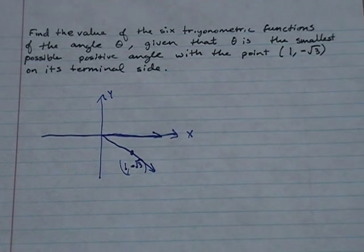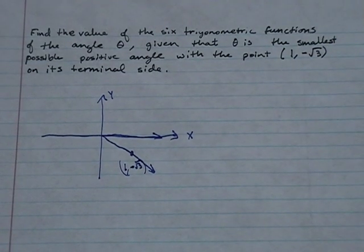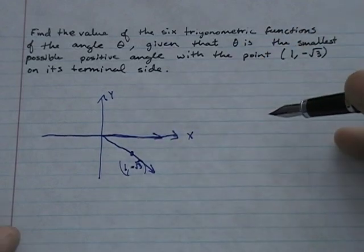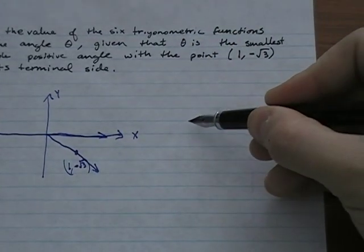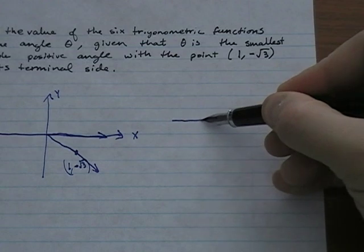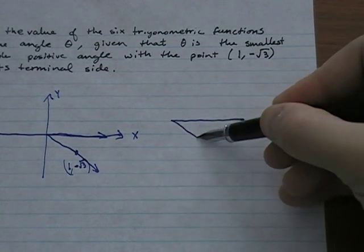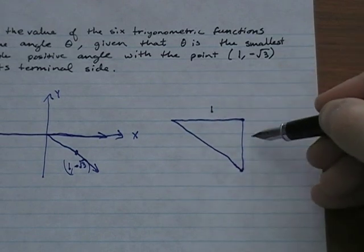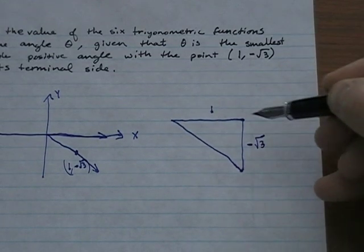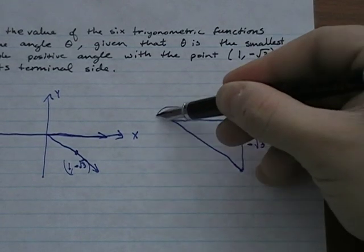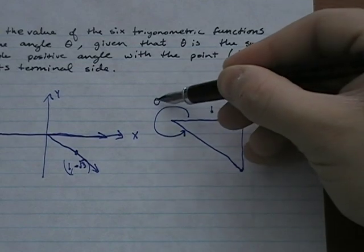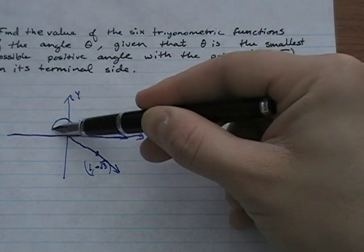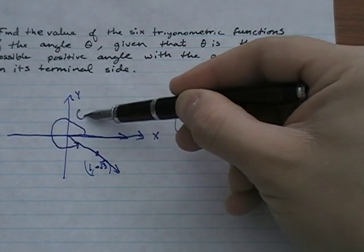What that's really telling me — zooming in — is I've got a triangle where the horizontal leg is 1 and the vertical leg is -√3. Theta goes from the initial side to the terminal side.